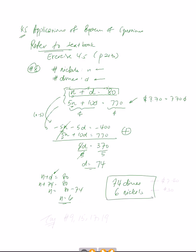You can always check your work. 74 dimes at 10 cents each is $7.40, and 6 nickels is 30 cents. Adding those gives $7.70, and the total coin count is 80. So you can always check when you do word problems.